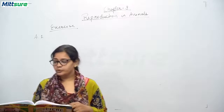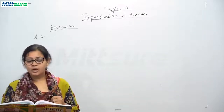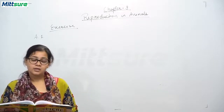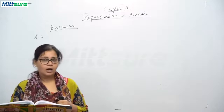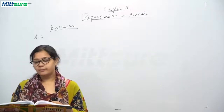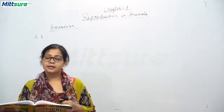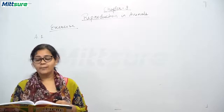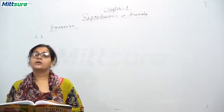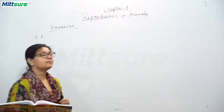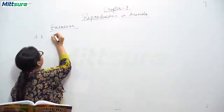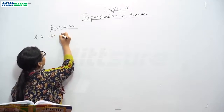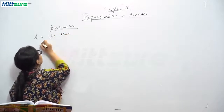Let me read the first question to you. Which among the following is an oviparous animal? The options are: a) cat, b) hen, c) dog, and d) monkey. The correct answer is b) hen.